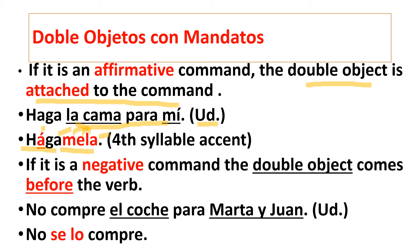Now, if it's a negative command, we follow the same rule we learned before — the double object comes before the verb. It's like a sandwich between the verb and no. For example: no compre el coche para Marta y Juan. You're using a usted command, so you say 'don't buy it for them.' So you go: no se lo compre. Why se? Because I cannot have le here — I have a combination of le lo, so I change the le to se.